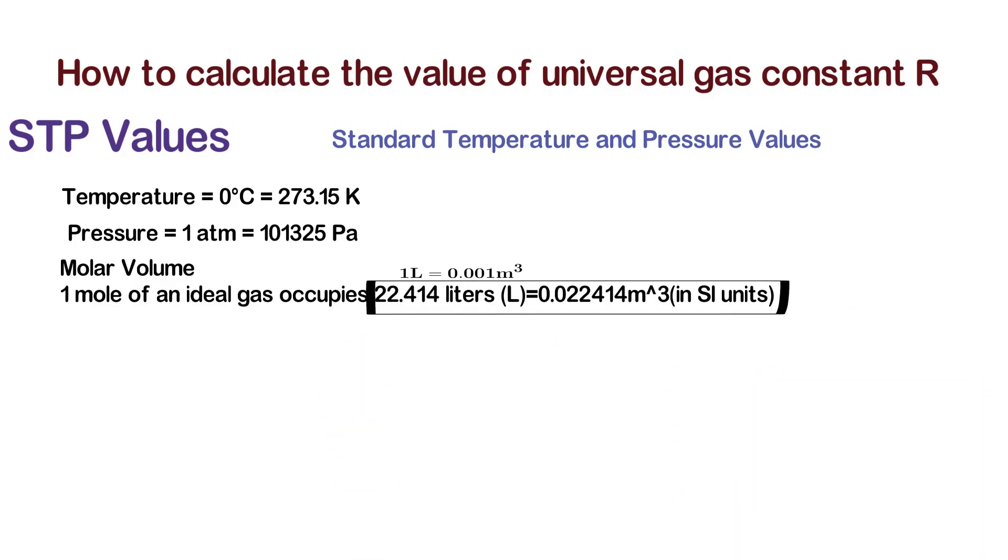So this is the set of STP values. Using these values, we can calculate the value of universal gas constant.